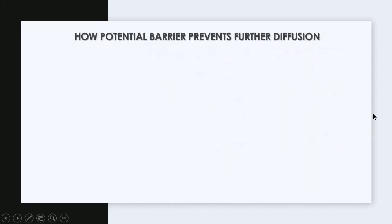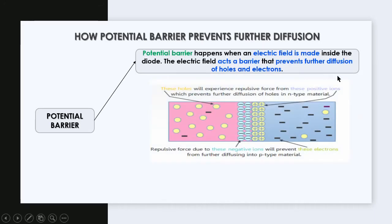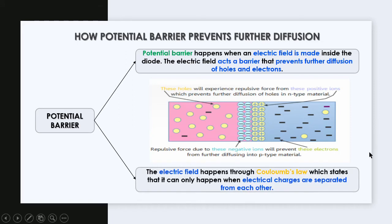After depletion happens, a potential barrier is created to prevent further diffusion in the diode. A potential barrier happens when an electric field is made inside the diode. The electric field acts as a barrier that prevents further diffusion of holes and electrons. This electric field occurs through Coulomb's law, which states that it can only happen when electric charges are separated from each other — as shown in the diagram, the charges are sufficiently separated to create a potential barrier and prevent further diffusion.